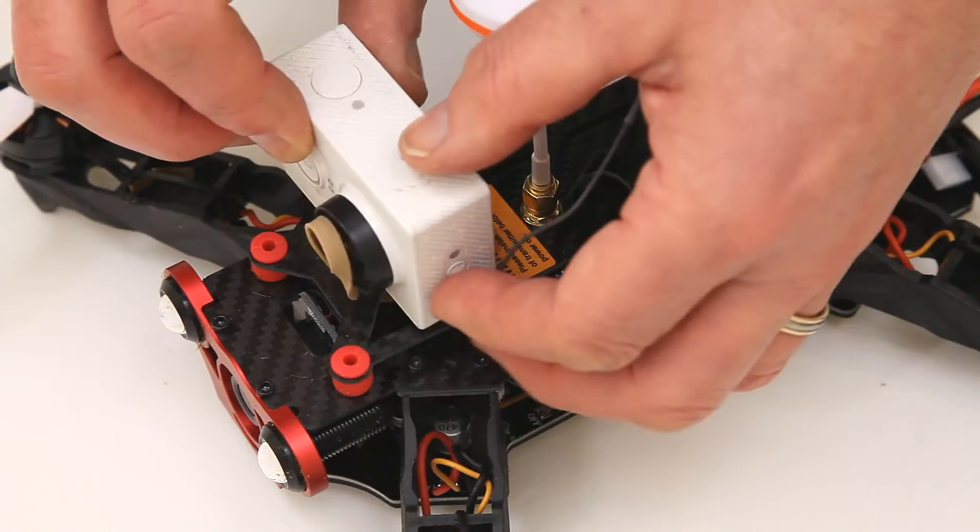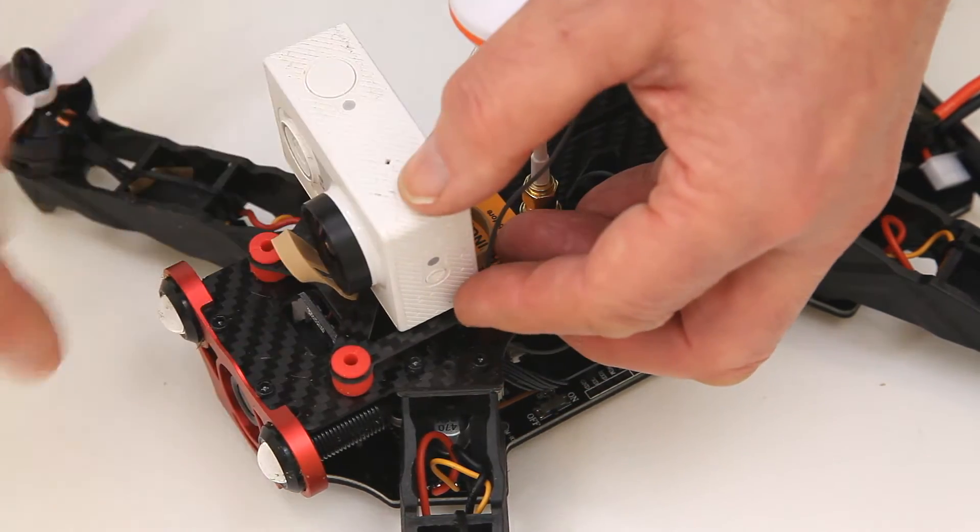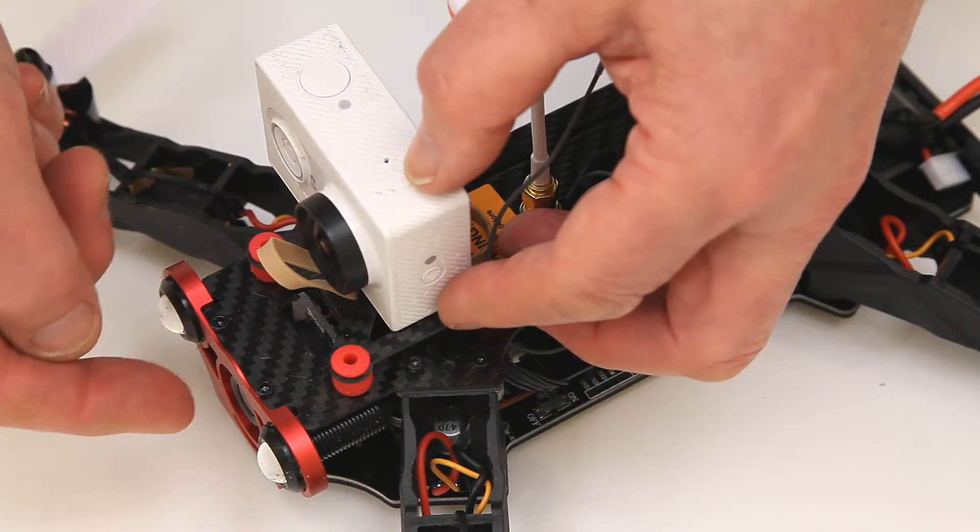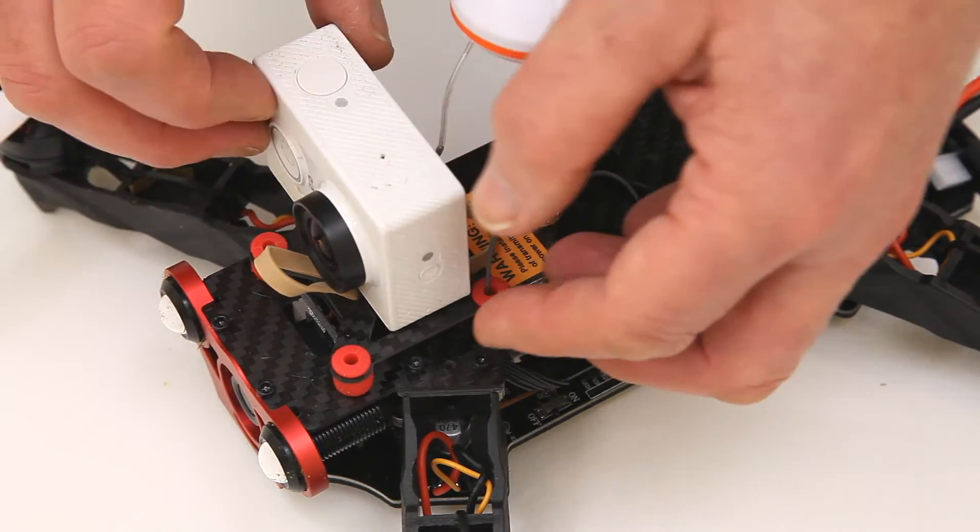I'm going to mount it so the camera lens is centered on the actual quad, so it will be in line with the FPV camera mounted inside the quad.